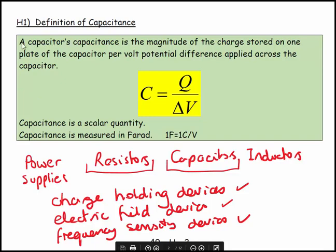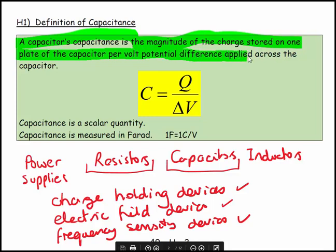Let's say a capacitor's capacitance is the magnitude of the charge stored on one plate of the capacitor for each volt of potential difference applied across the capacitor.